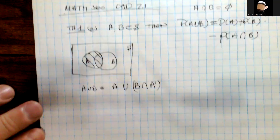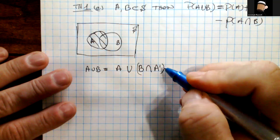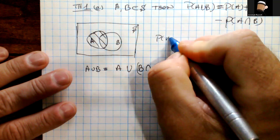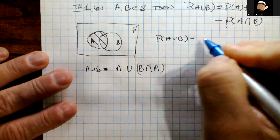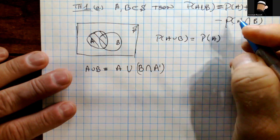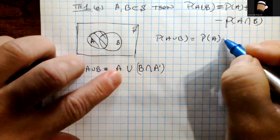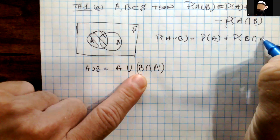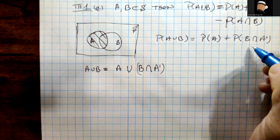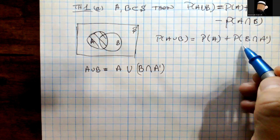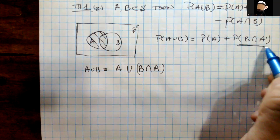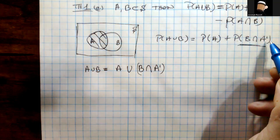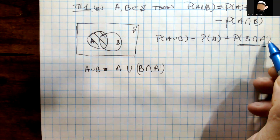Using property C, we write the probability of A ∪ B as the sum of the two individual probabilities: P(A ∪ B) = P(A) + P(B ∩ A-complement). Now we need to do something with this term P(B ∩ A-complement).